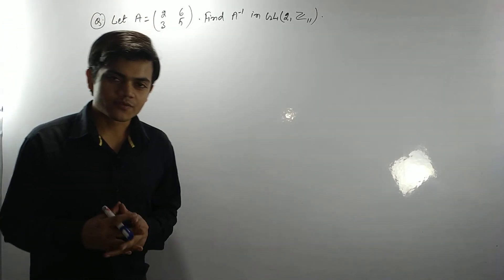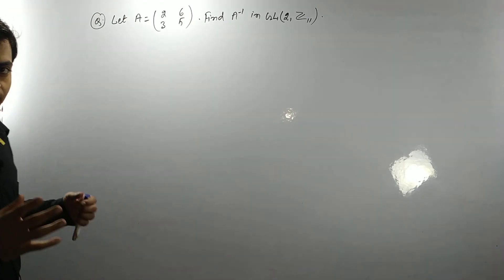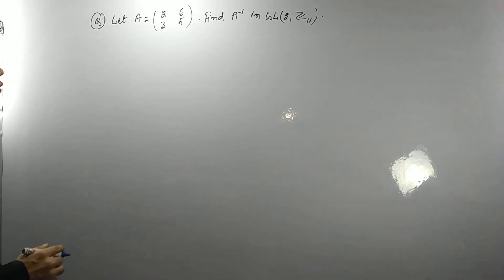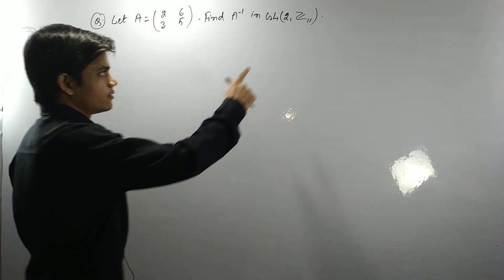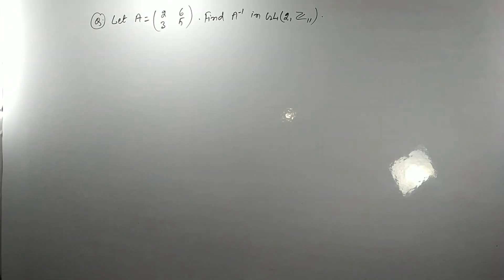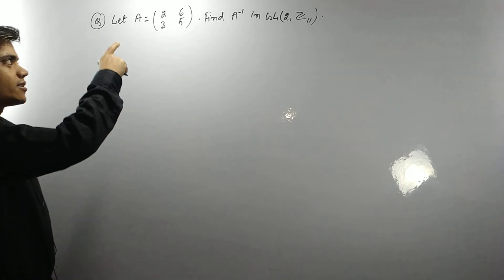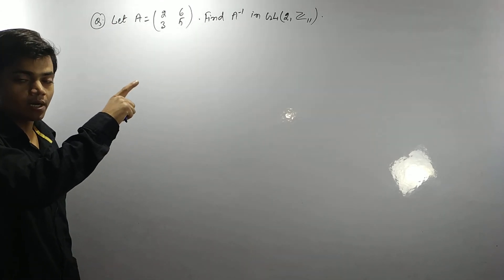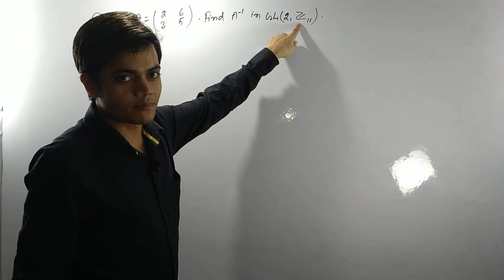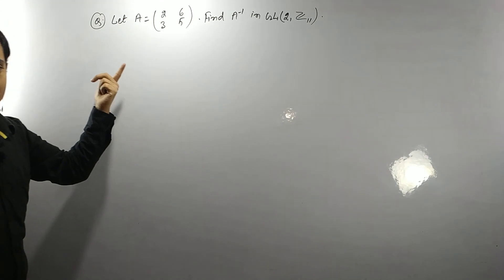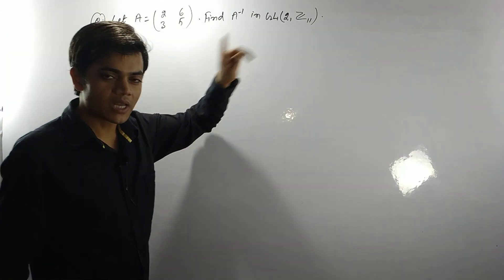Hello everyone. In this video lecture we have a very interesting question of group theory. What makes it interesting is Z₁₁. The question is: you have a 2×2 matrix and you have to find its inverse, but over Z₁₁. Otherwise it is a very simple question — we have to find the inverse in this group.